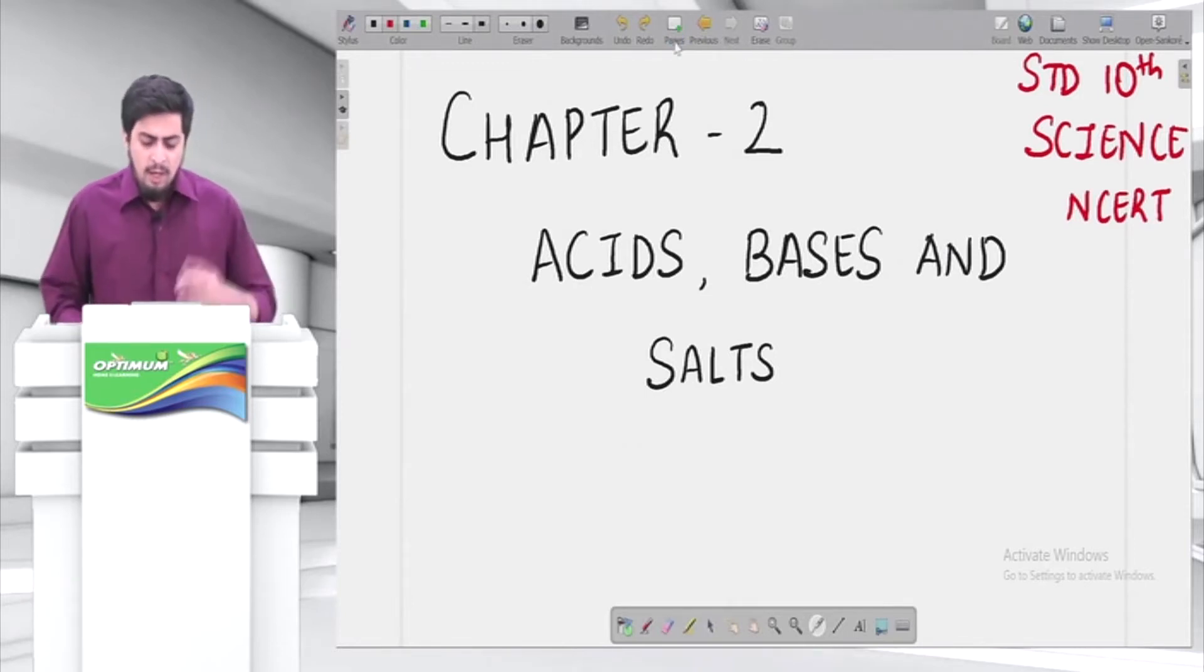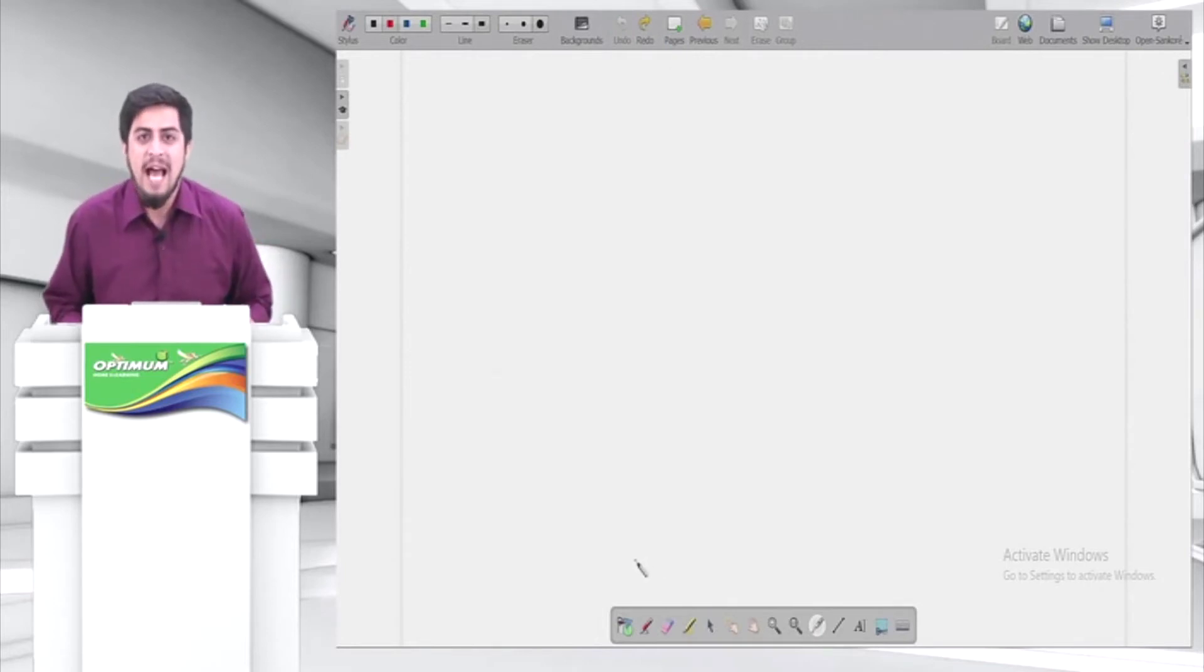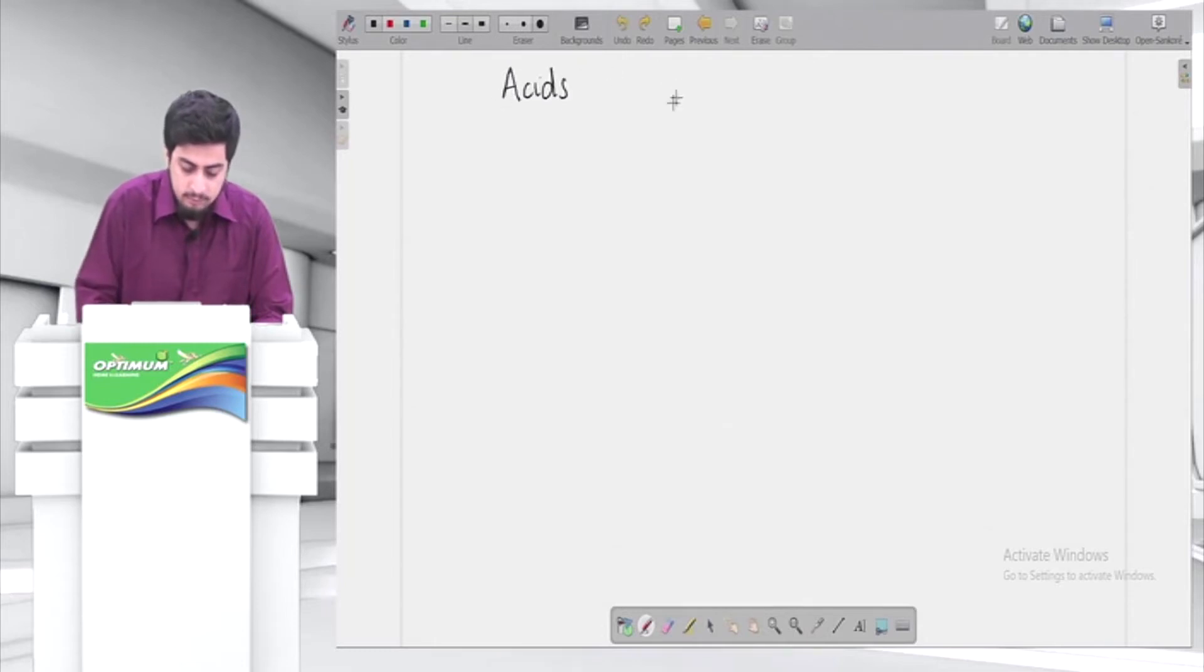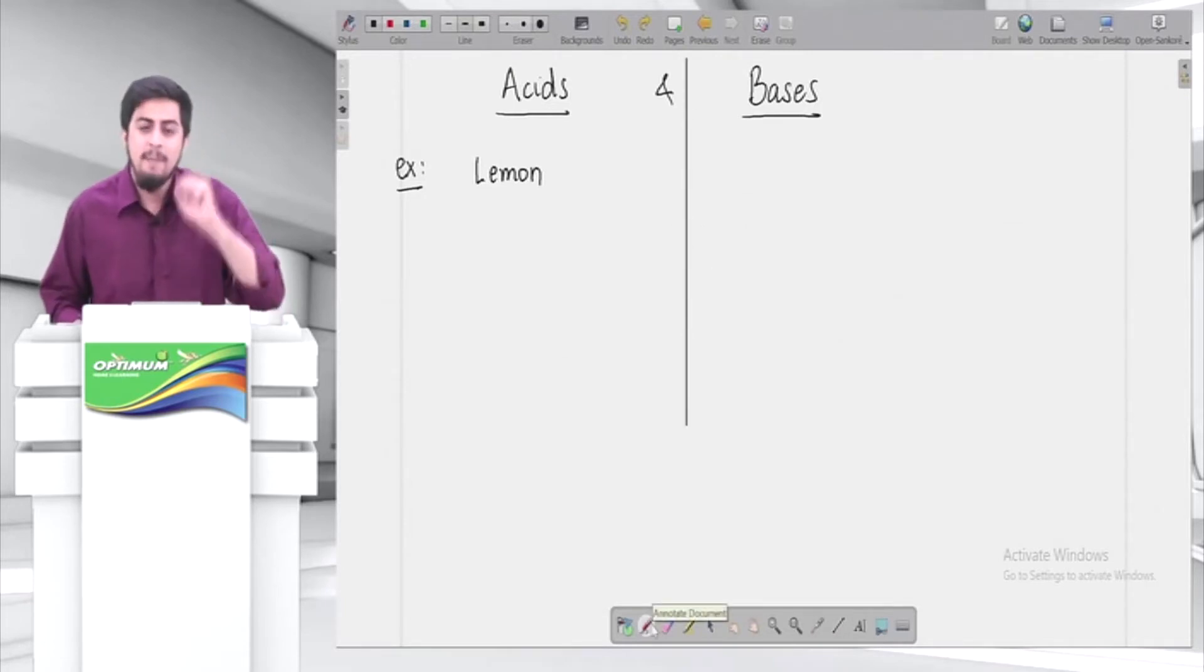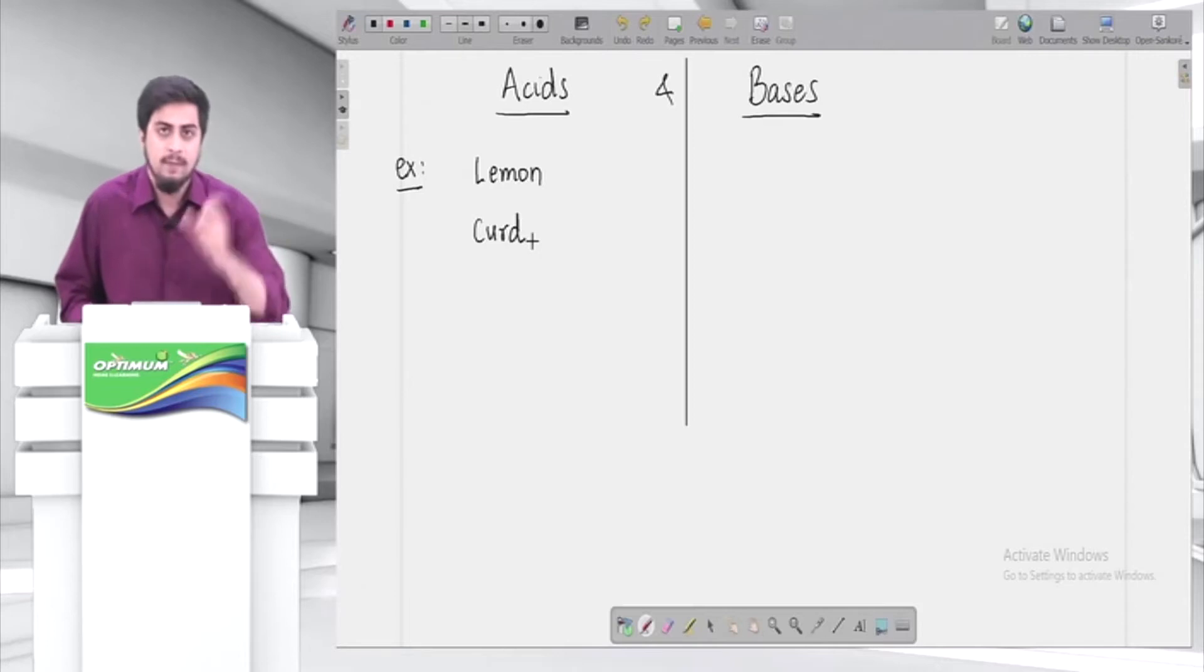So friends, what are the basic things you should know about acids and bases? Let's first start with acids and bases. Let me start with some examples of acids. You know lemon, right? Nimbu which we put in food - lemon is an acid. Let me list down a few acids and few bases. Curd, dahi jo khate hai na, it's an acid. Tamarind, imli, right? Khatti hoti hai - it's an acid.